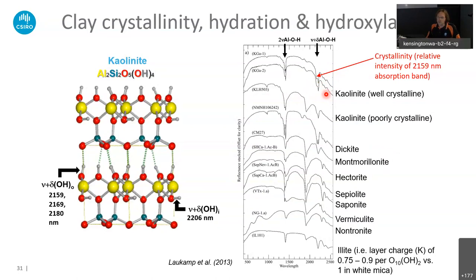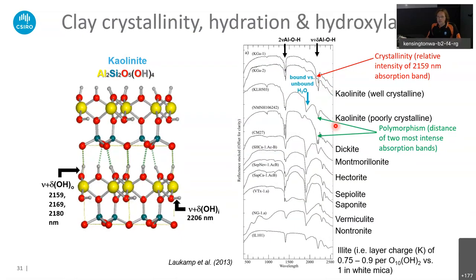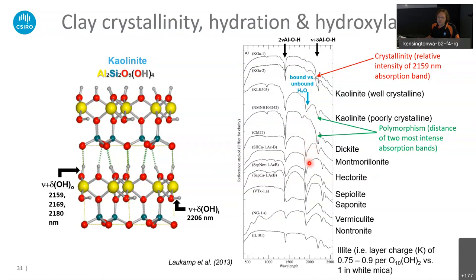The crystallinity of kaolinite can be inferred from the shape of the 2200 nm absorption feature — that's well-described and well-known. The polymorphism of different kaolinite group minerals can also be identified: we can distinguish kaolinite from dickite simply by measuring the distance of the most intense absorption bands in this wavelength region. We can also distinguish bound from unbound water, which is interesting with reflectance spectra. Looking at montmorillonite or smectite, we see a mix: there's a pointy water feature indicating some bound water, but also a pretty broad 1900 nm feature indicating unbound water as well.